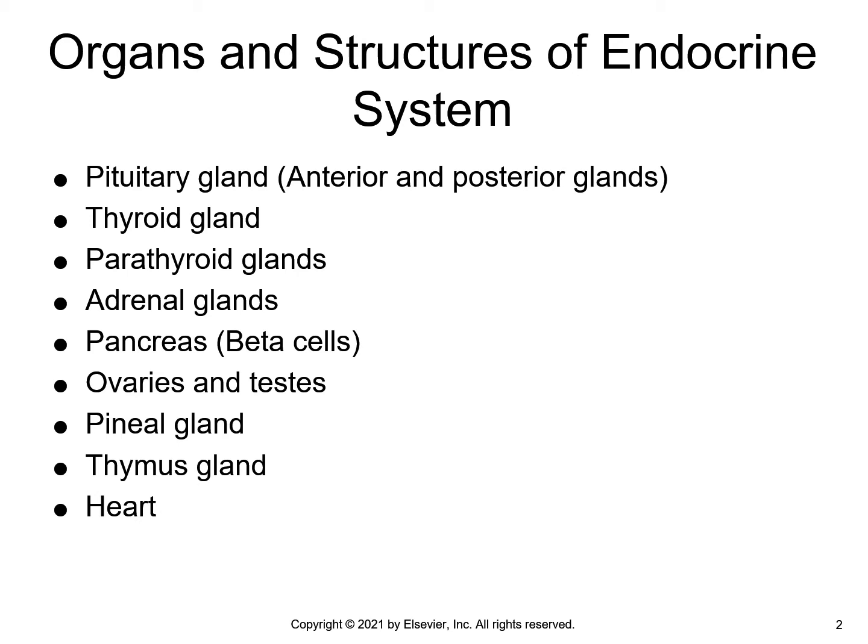The pancreas is in the upper left abdominal cavity. The beta cells secrete insulin and the alpha cells secrete glucagon, and these are found in the islets of Langerhans. Ovaries are located in the female pelvic cavity. The testes hang suspended in the male scrotum. The pineal gland is in the midbrain. The thymus gland is at the base of the neck in front of the thoracic cavity.